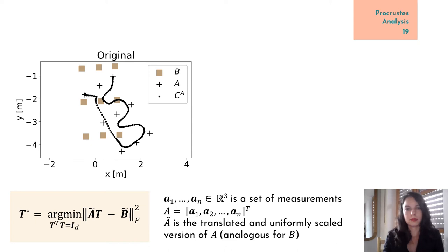In this example, we want to map the points in the coordinate system of A to the coordinate system of B. Procrustes analysis finds the rotational component T, which minimizes the Frobenius norm of the difference between the transformed and the target sets of points.